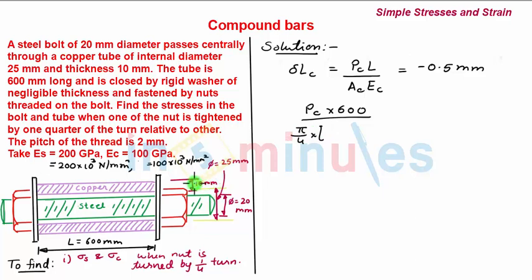So the outer diameter is 45 mm. Therefore: Pc × 600 divided by π/4 × (45² - 25²) × 100 × 10³ equals -0.5. Solving this, the load on the copper tube Pc equals -91.62 kN, which is compressive.